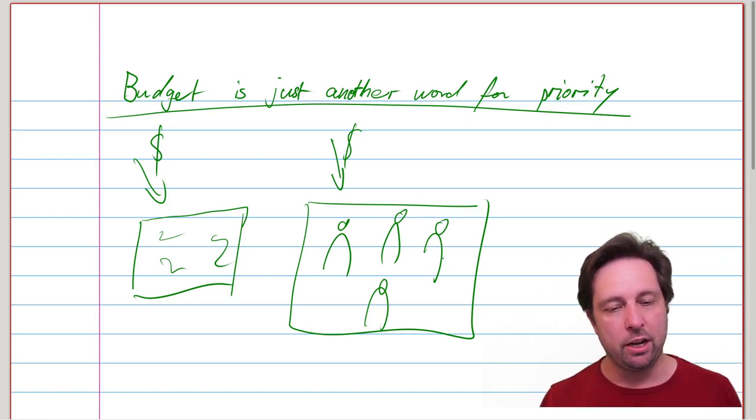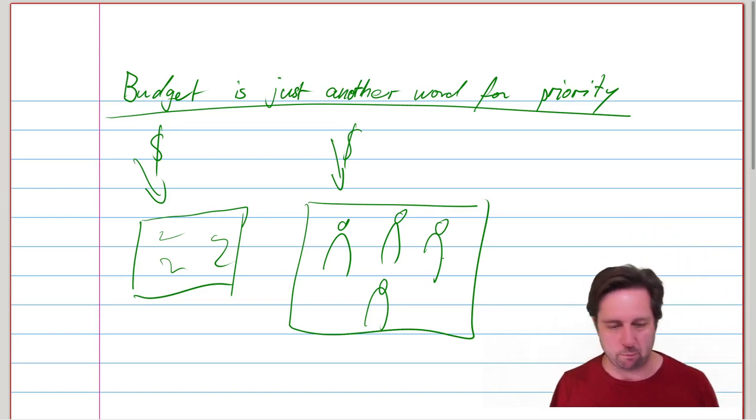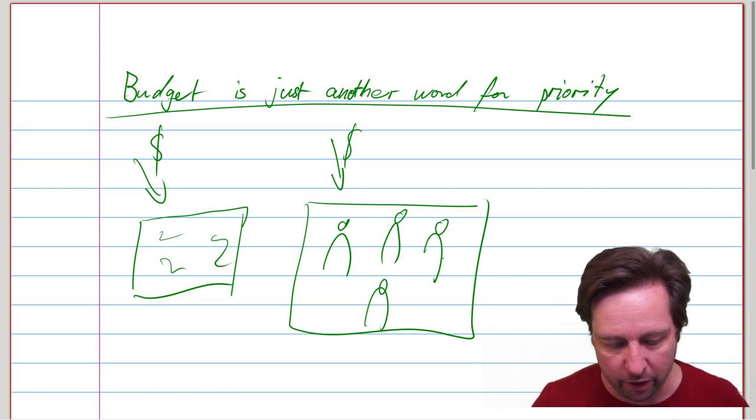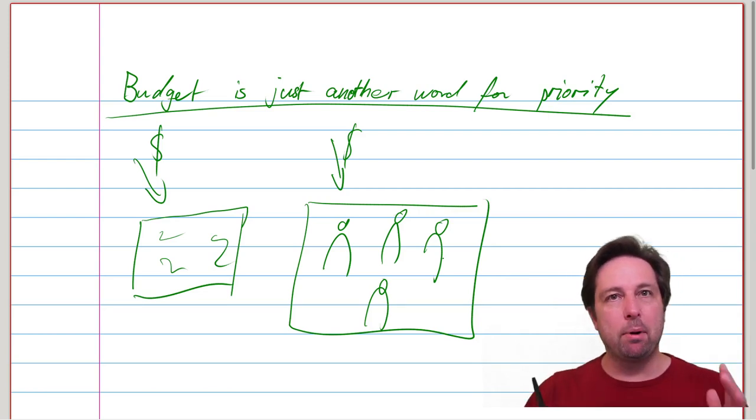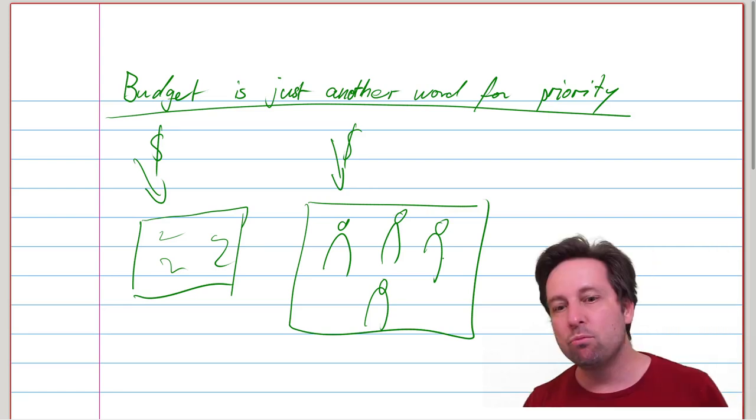I mean, in fact, this is what many agile advocates and SAFe advocates, for instance, from the Scaled Agile Framework, propose. They say don't allocate budgets to projects. That doesn't work.